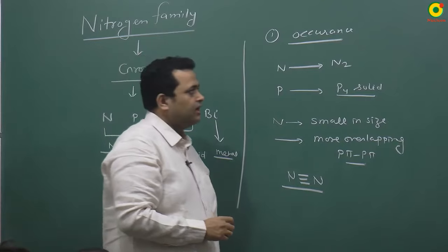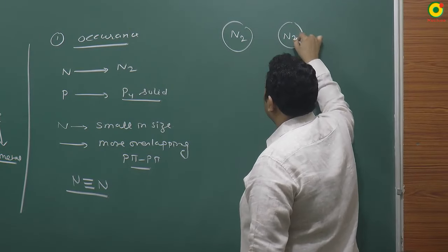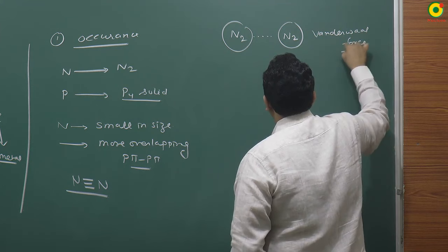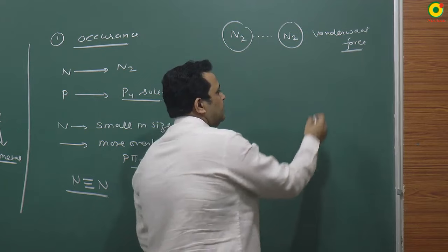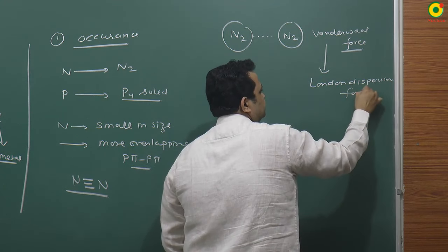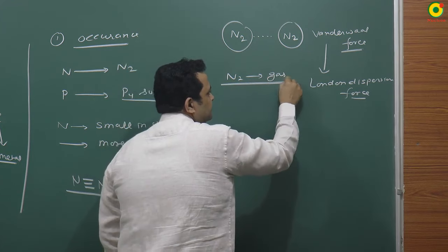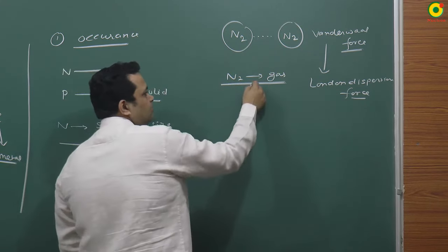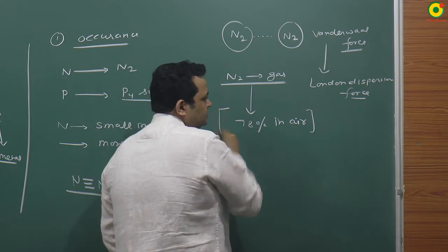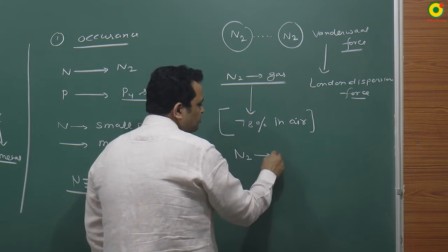Because of small size, nitrogen easily forms triple bonds, so it exists as N2. N2 is a non-polar molecule with very weak intermolecular forces - specifically London dispersion forces. Because of London dispersion forces, N2 is found in gas state. Nitrogen gas makes up 78% of air, and it is almost inert.